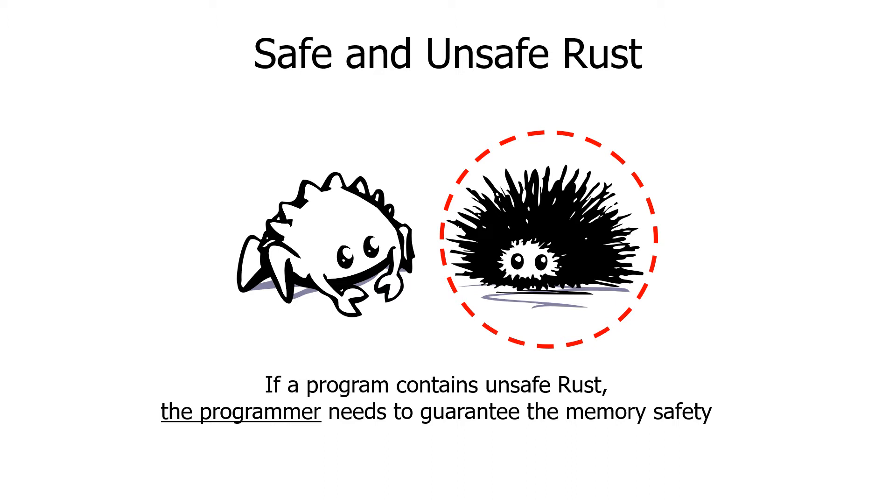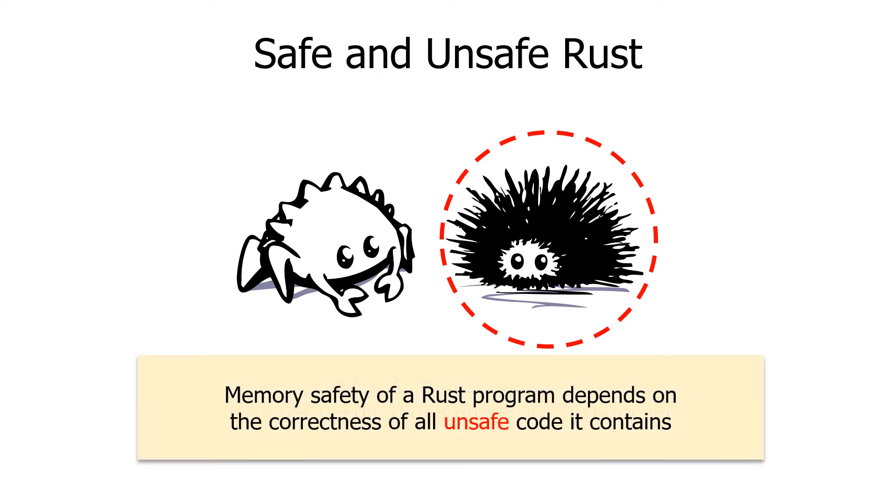In this case, the programmer must guarantee the absence of memory safety bugs. In other words, memory safety of a Rust program depends on the correctness of all unsafe code it contains.